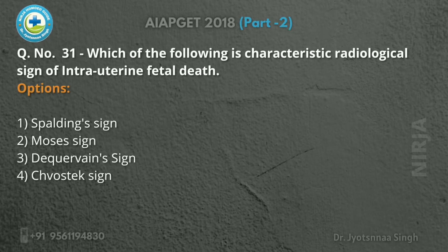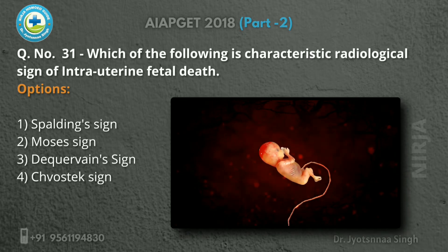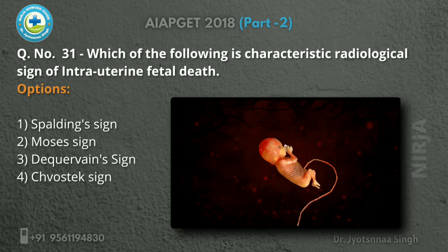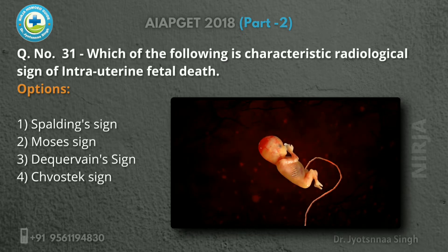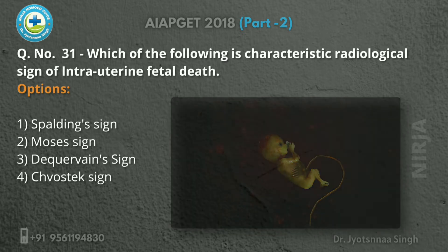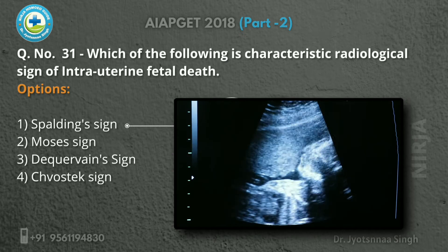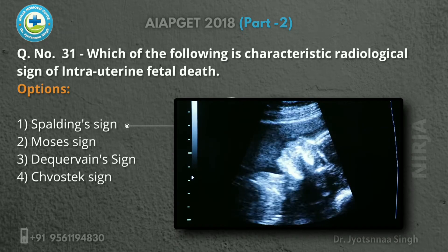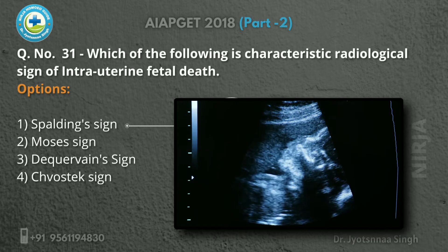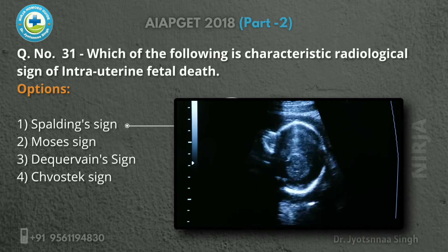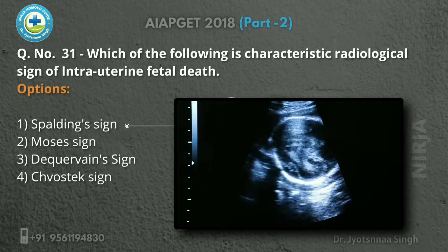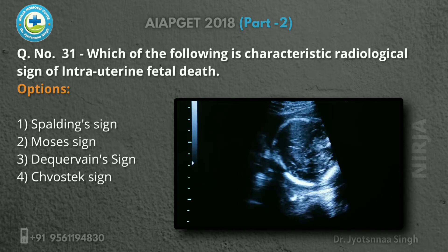Which of the following is a characteristic radiological sign of intrauterine fetal death? The first option is Spalding sign. Spalding sign is the irregular overlapping of the cranial bones on one another, due to the liquefaction of the brain matter and softening of the ligamentous structure. This sign usually appears seven days after death.